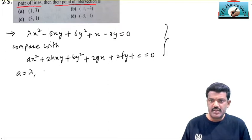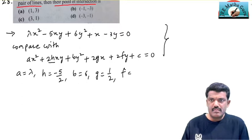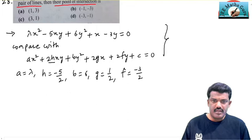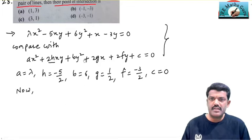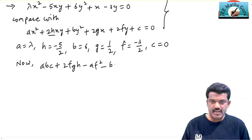Comparing both equations, the coefficient of x² gives a = λ. The coefficient of xy is −5, so 2h = −5, giving h = −5/2. The coefficient of y² gives b = 6. The coefficient of x gives 2g = 1, so g = 1/2. The coefficient of y gives 2f = −3, so f = −3/2. There is no constant term, so c = 0. The condition for the general equation to represent a pair of lines is: abc + 2fgh − af² − bg² − ch² = 0.